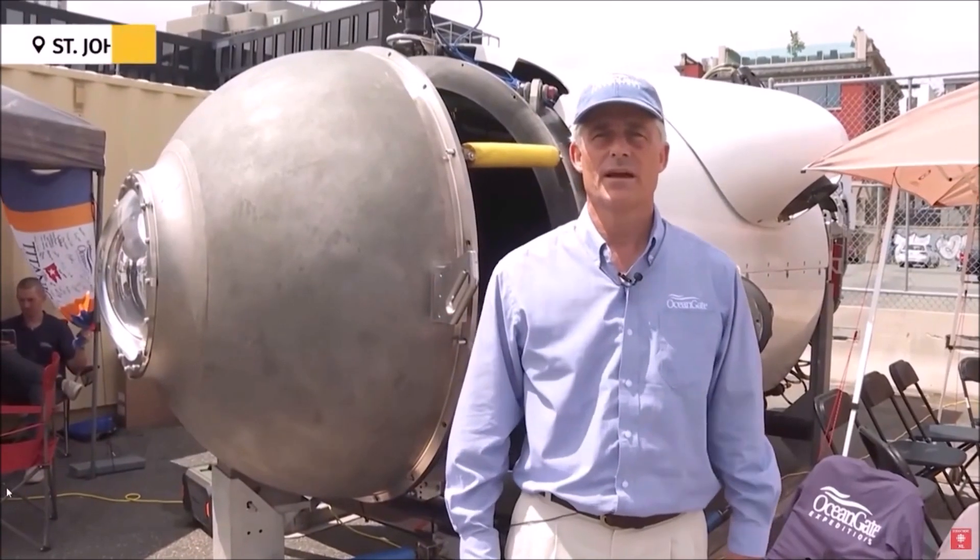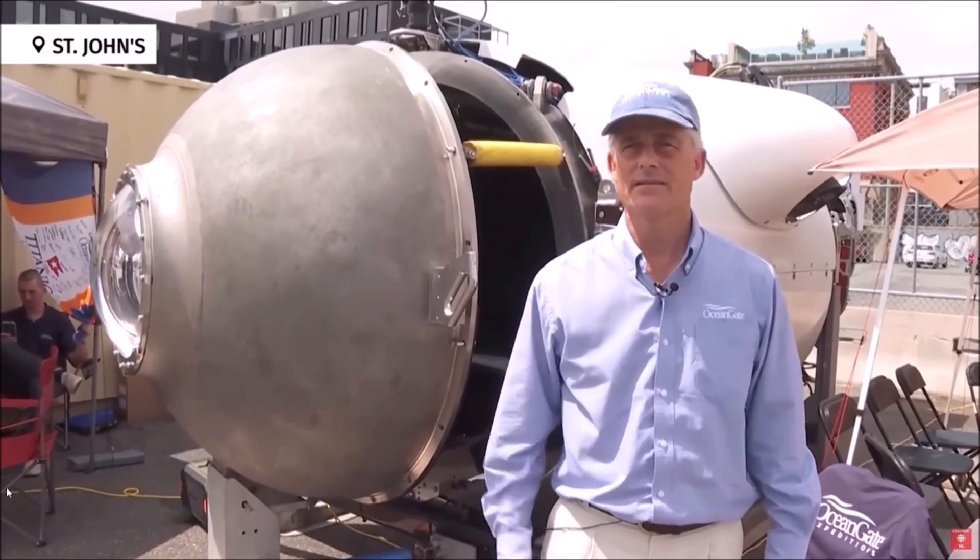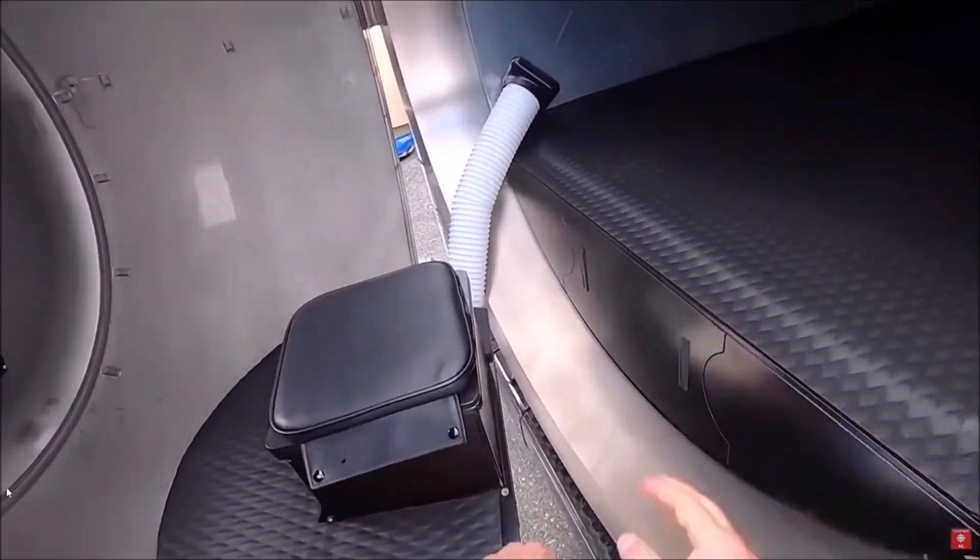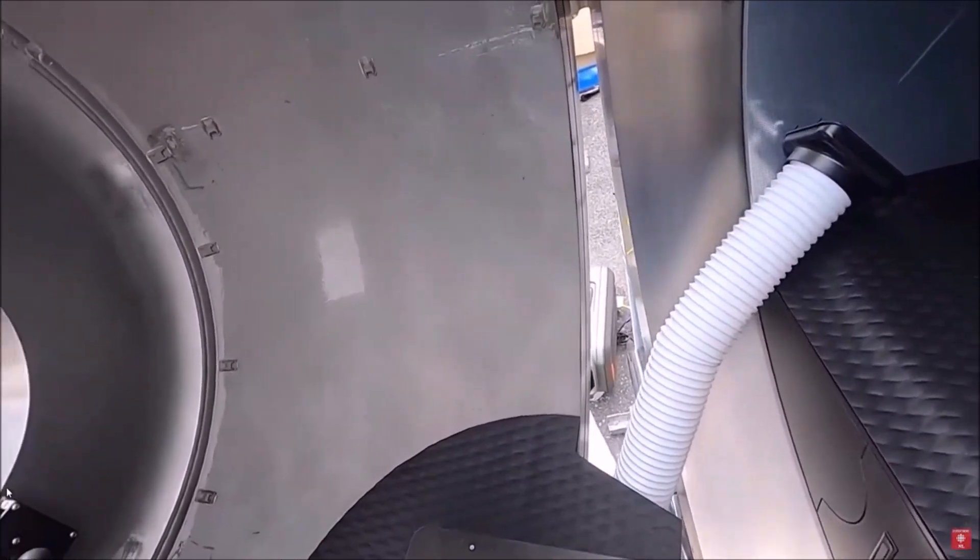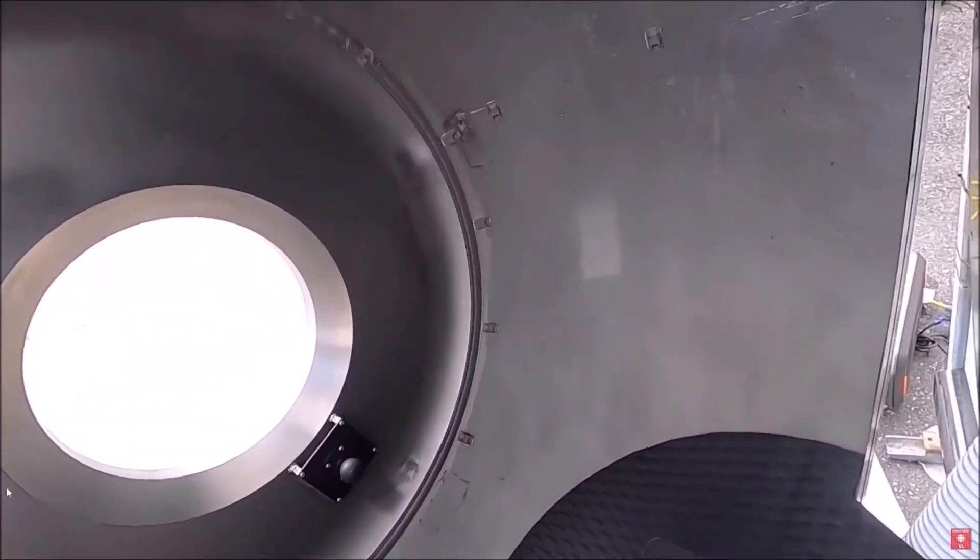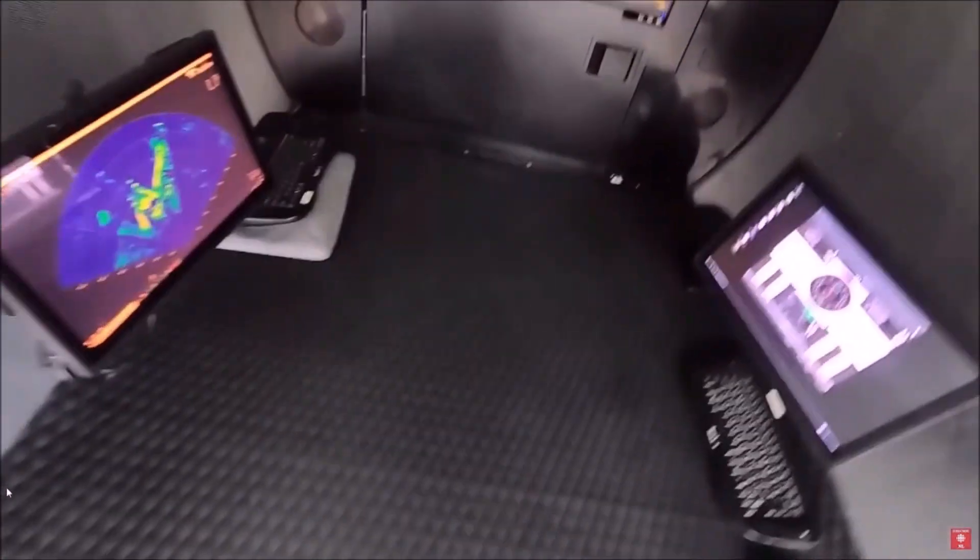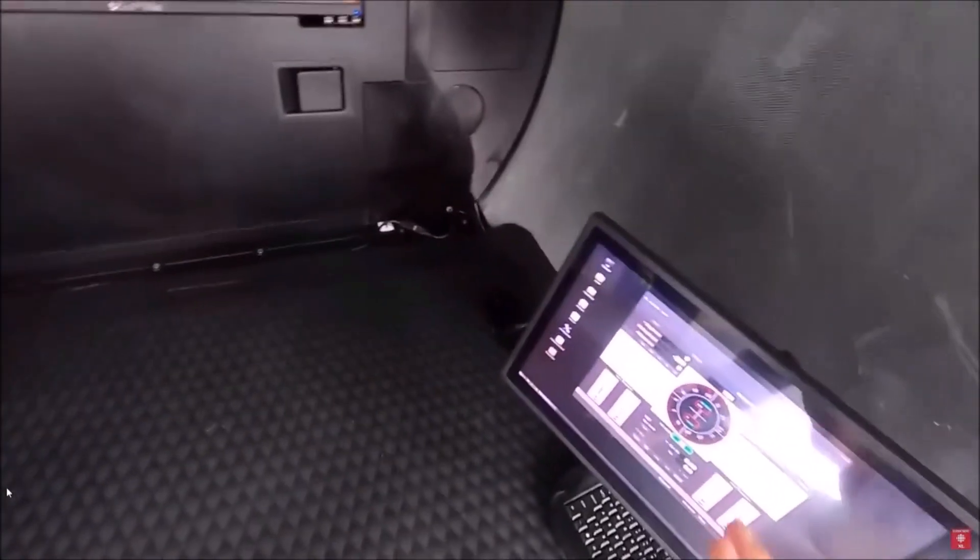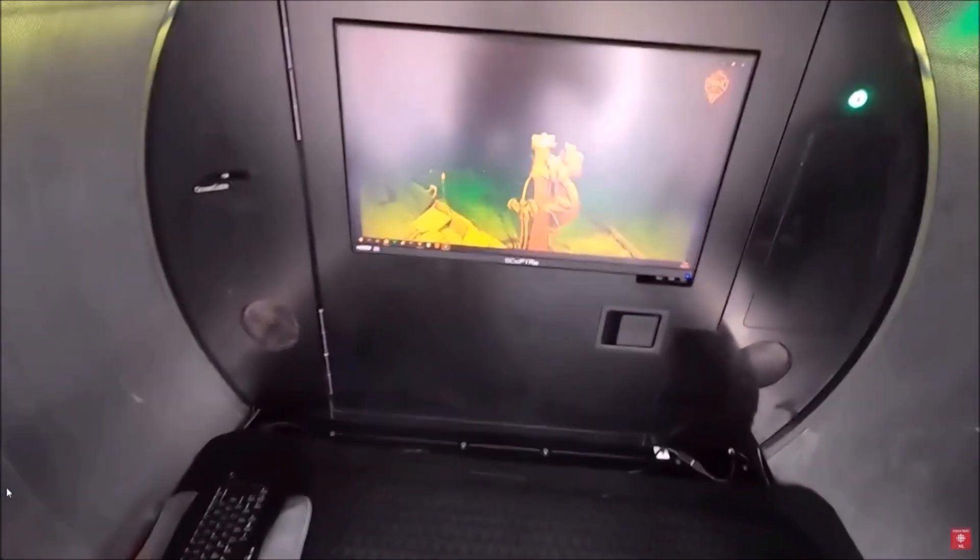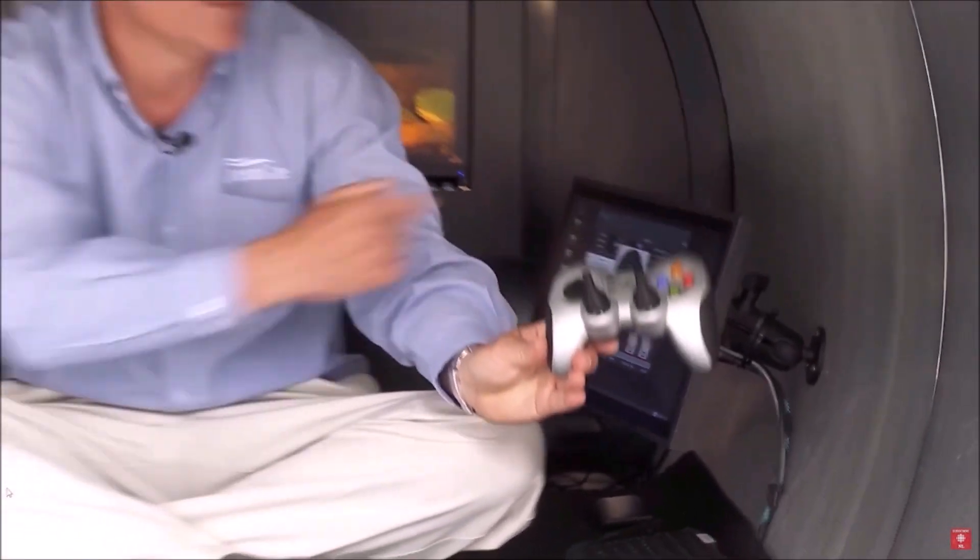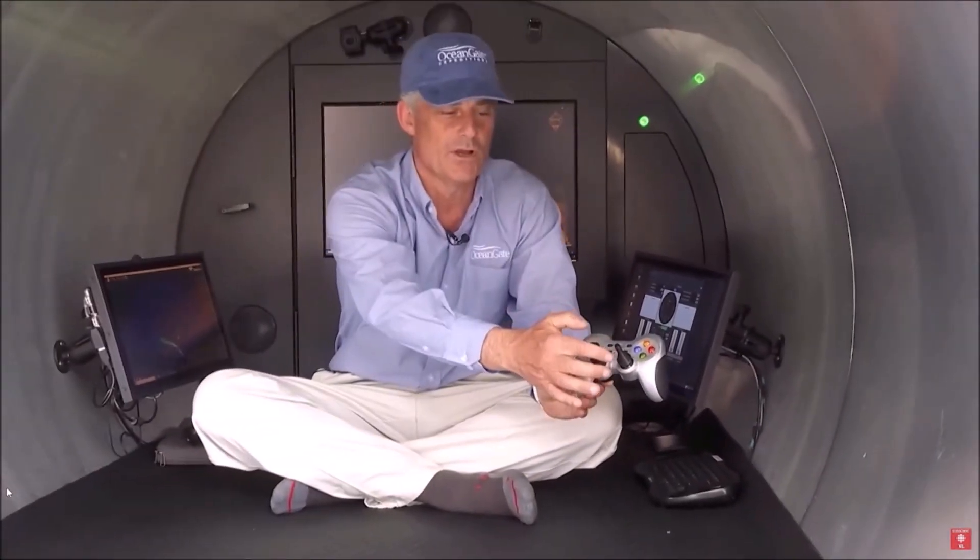My series on the Ocean Gate Titan submersible wouldn't be complete if I didn't also go over the internal and external wiring and power systems, because I find them to be rather interesting. The media outlets, for example, seem to love ridiculing the use of a game controller for the navigation, but it is a rather clever hack that the APLUW engineers came up with for the Cyclops submersible, which I believe was just simply adapted to the Titan. I am not sure that it is understood by many what exactly was going on inside the Titan either, which is also interesting in its own way.